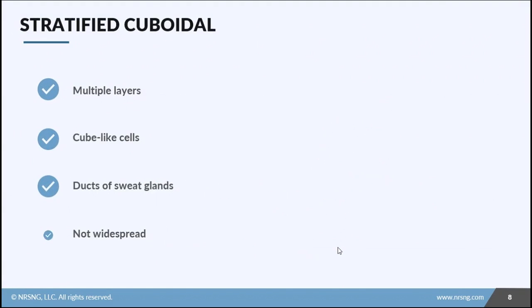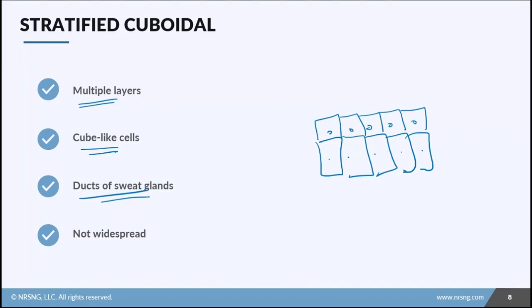We can also have stratified cuboidal. We have multiple layers that could be any size and shape, but the very top layer is cube-like. Multiple layers, stratified, cube-like, cuboidal. This is found in the ducts of sweat glands. These are not very widespread in the body. This is the main place we're going to find stratified cuboidal.